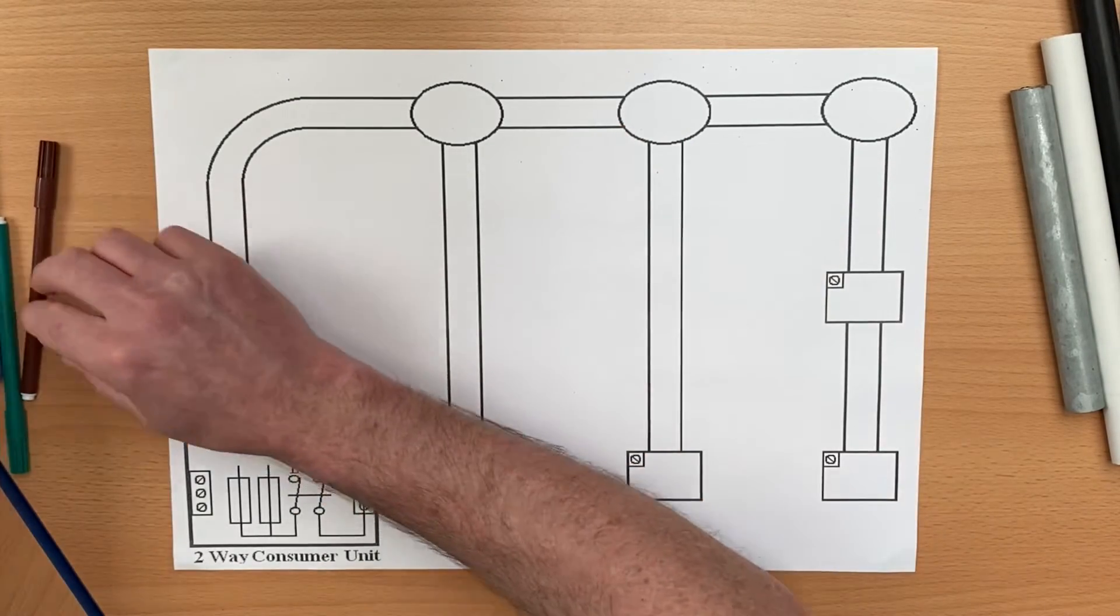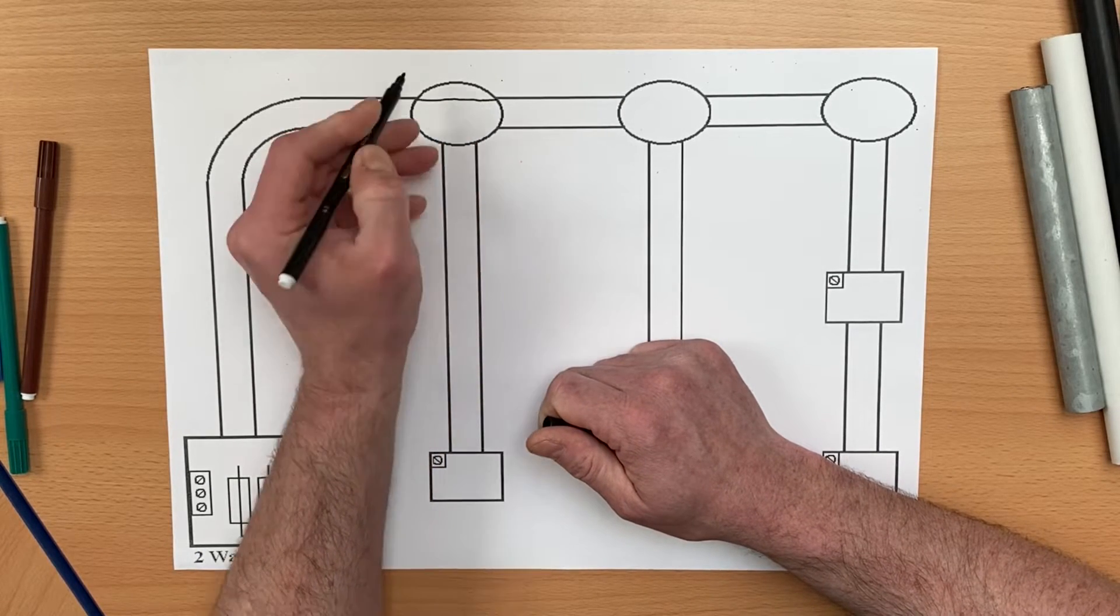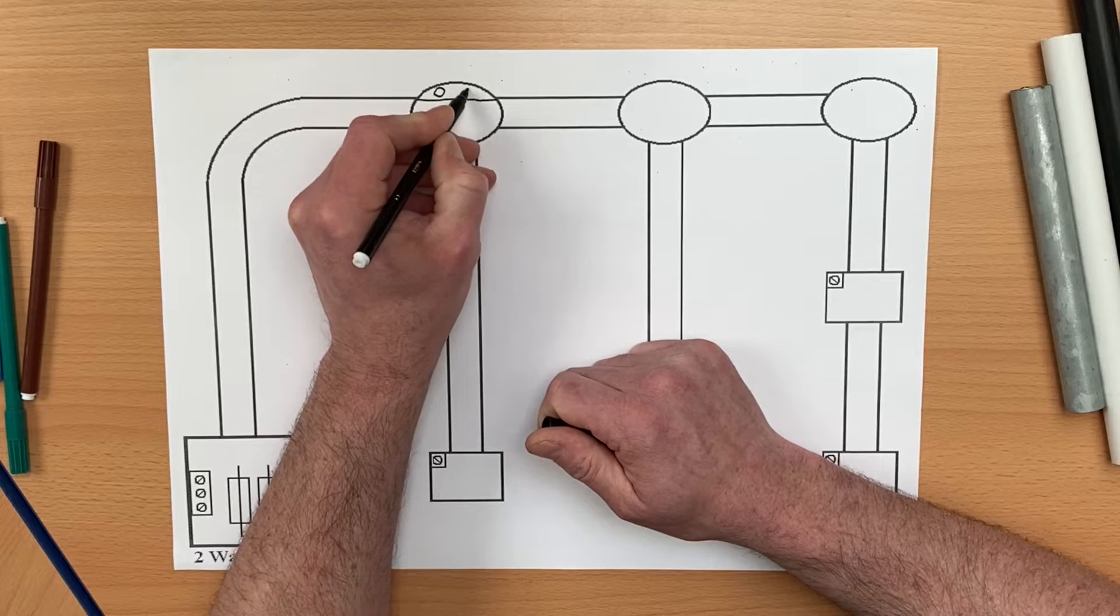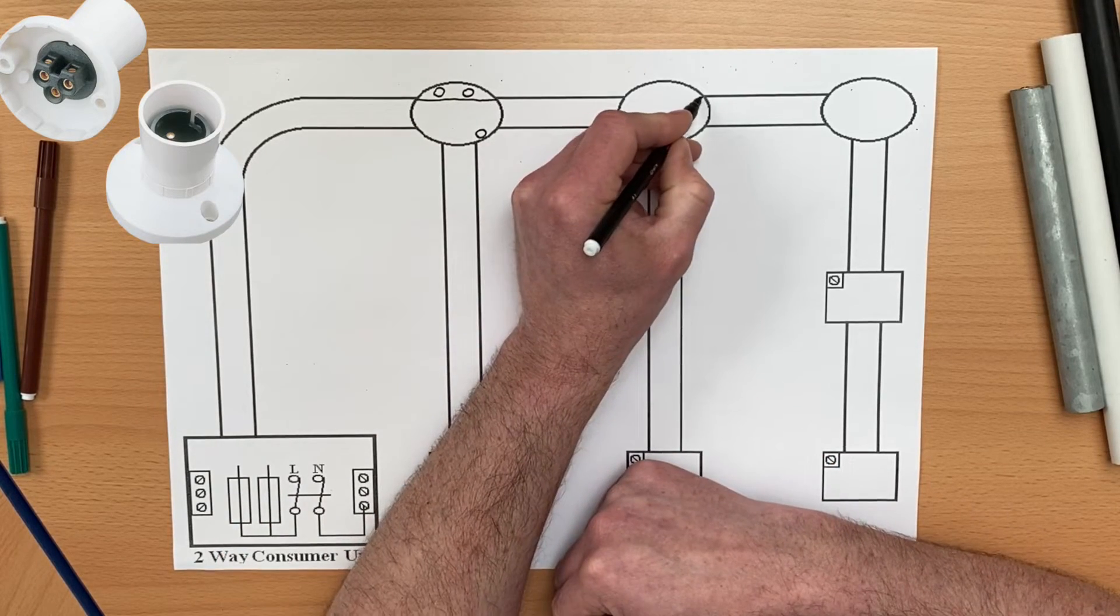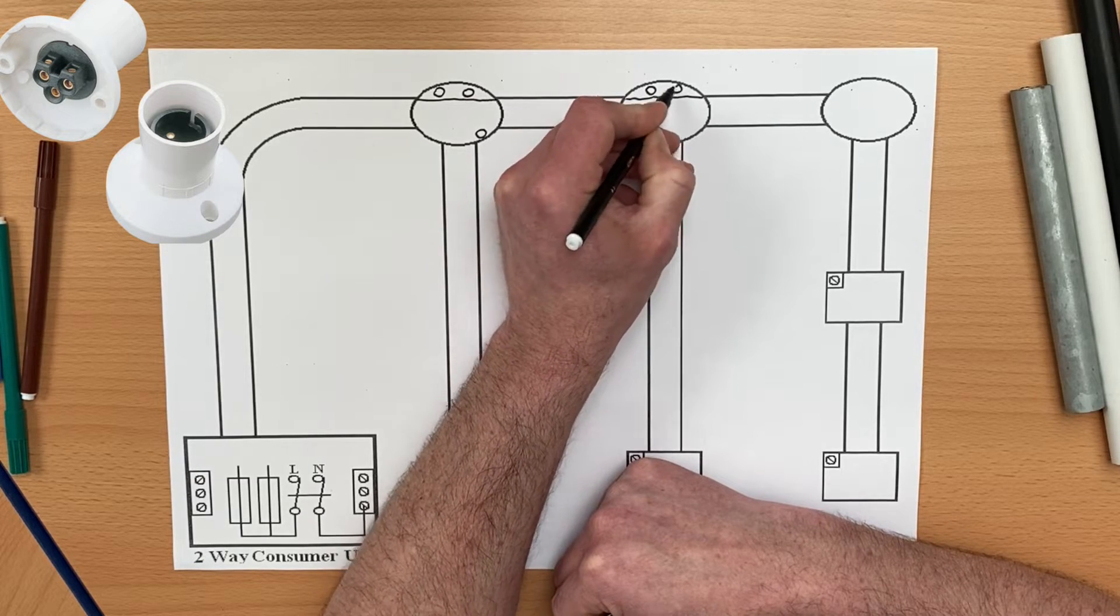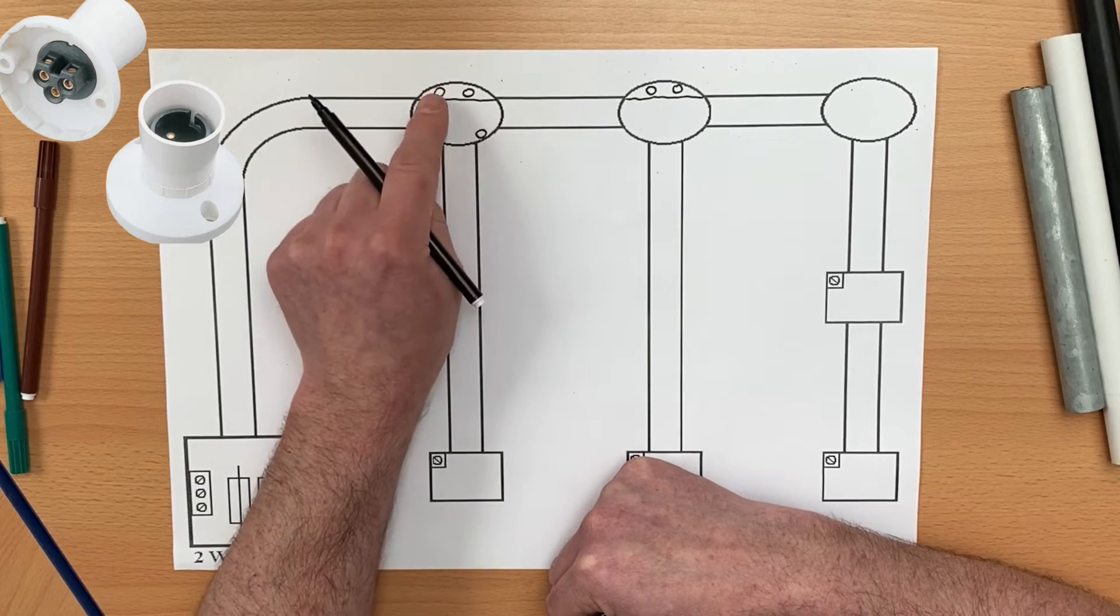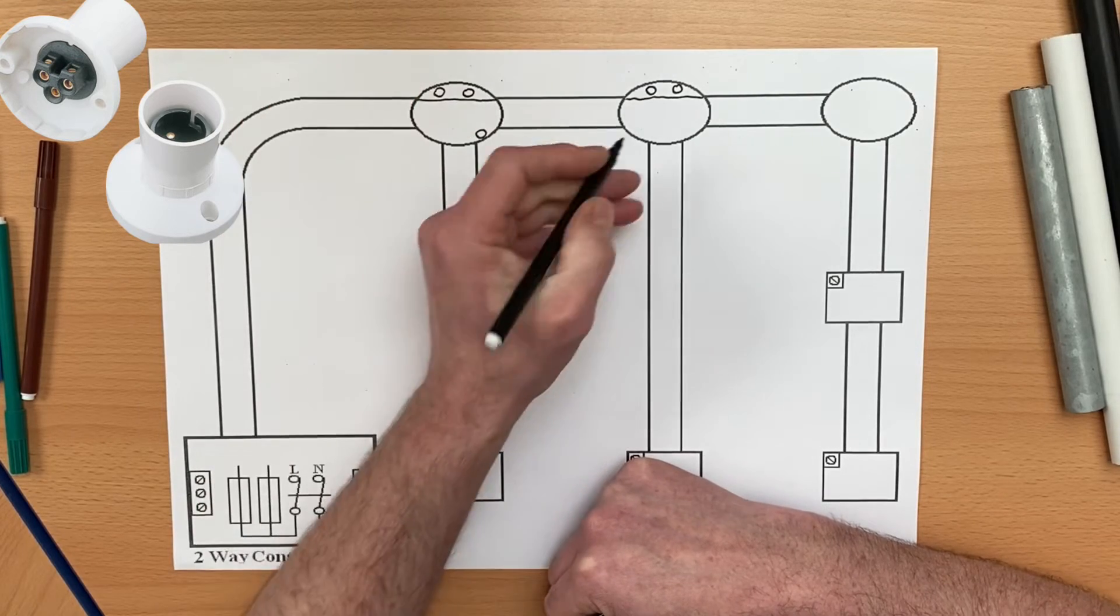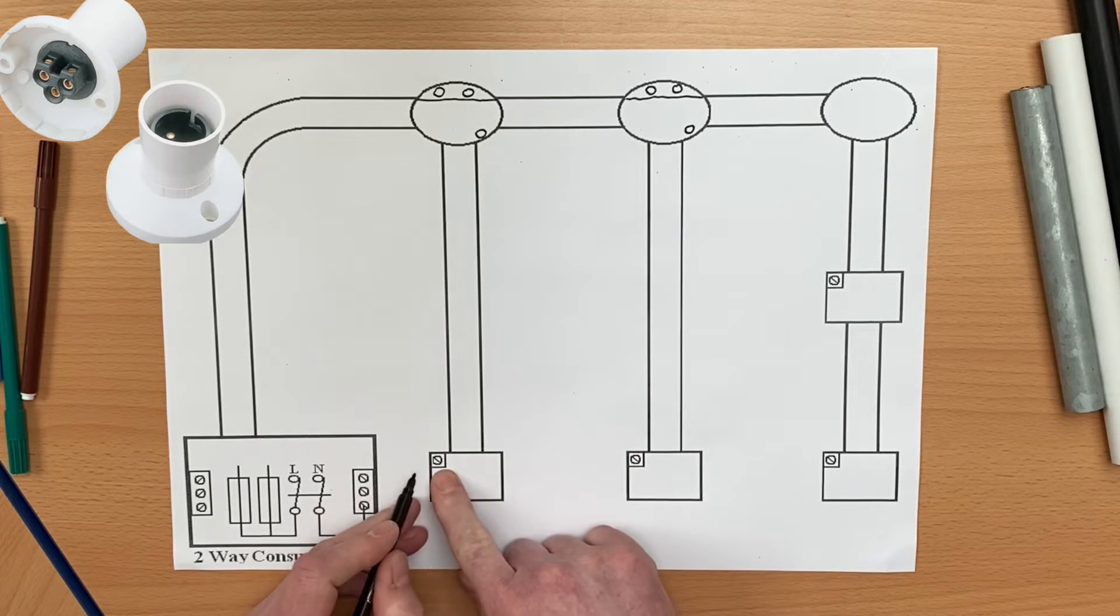I'm going to need to alter my drawing slightly to add some bits in. Remember we did this in the first one. I'm going to need to make a couple of connections here for switching line and neutral of our batten lamp holder and a CPC connection at both lighting points. It won't matter which way around our line and neutral go as long as we've got a bayonet cap lamp holder.